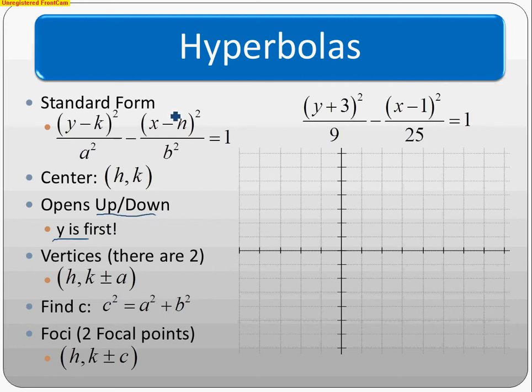Remember for every conic, X goes with H and Y goes with K. We have Y+3, so think opposite: center is (1,-3). We're going to go up and down.